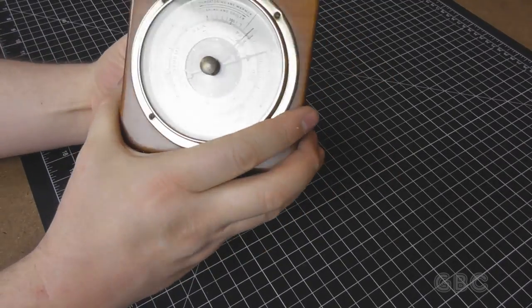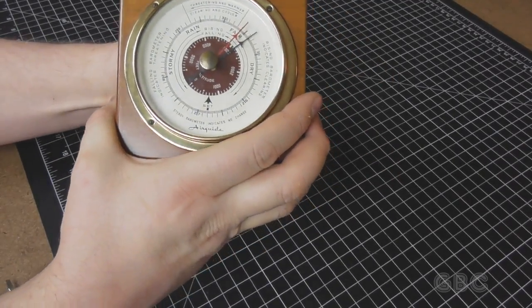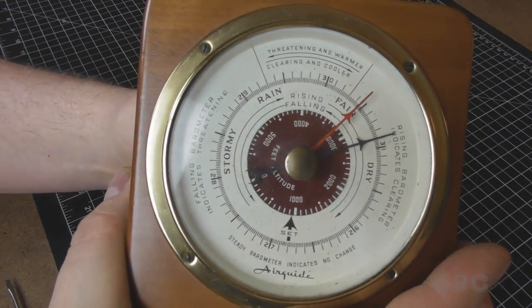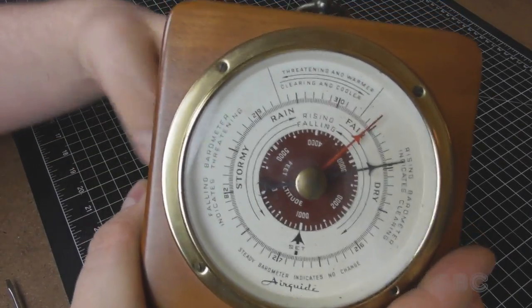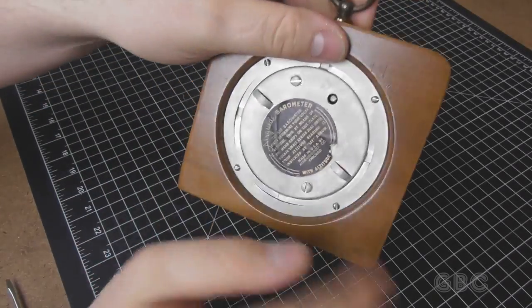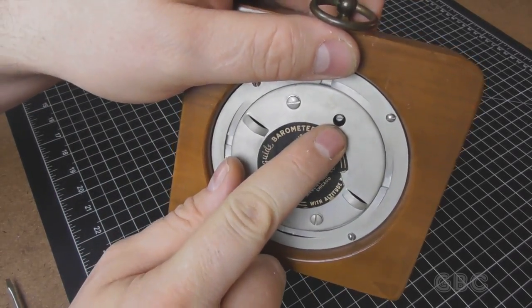The small dial in the middle is altitude in feet. So if you're a thousand feet above sea level, you'd set this to a thousand feet. And if you know your current barometric pressure, there is a calibration screw here.